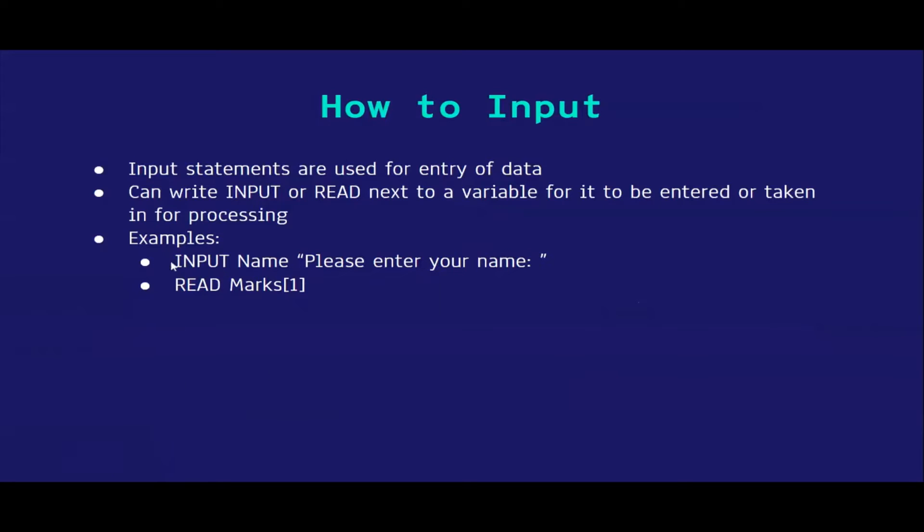My examples are input name, and then we write a sentence in quotation marks so that the user knows what they're supposed to input, or we can write read marks[1]. In this scenario marks is an array and it's telling to enter or take in the value that is stored in position 1 for processing.